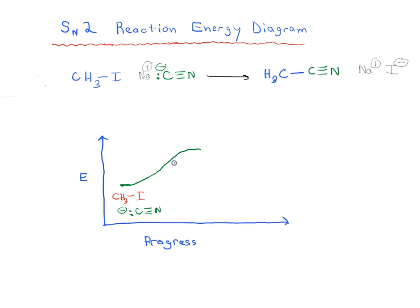And this maximum is usually sometimes defined by this special symbol, which is the double dagger. This is what we call a transition state.